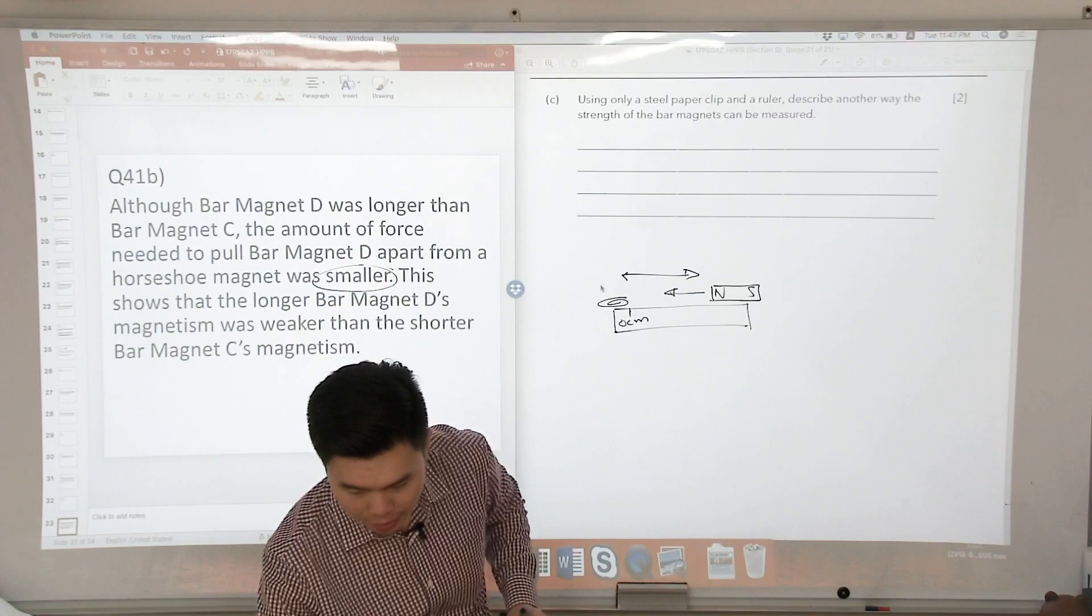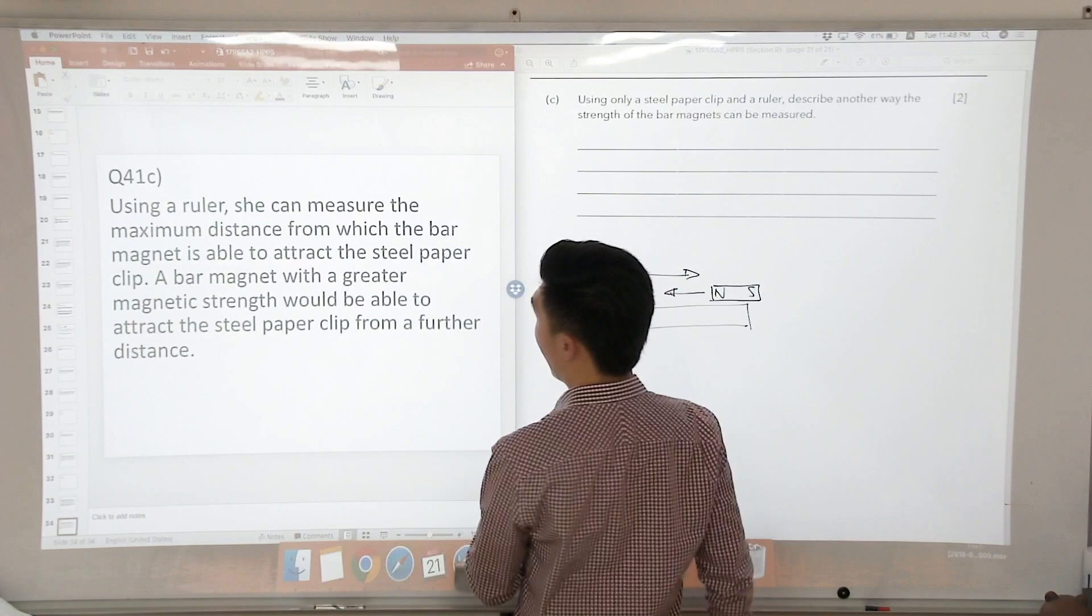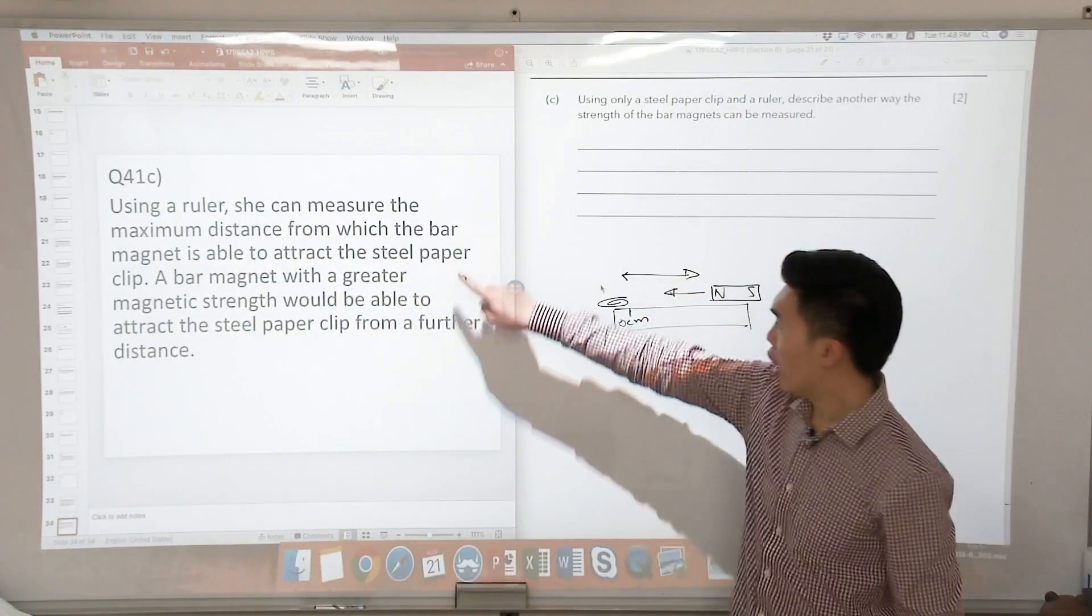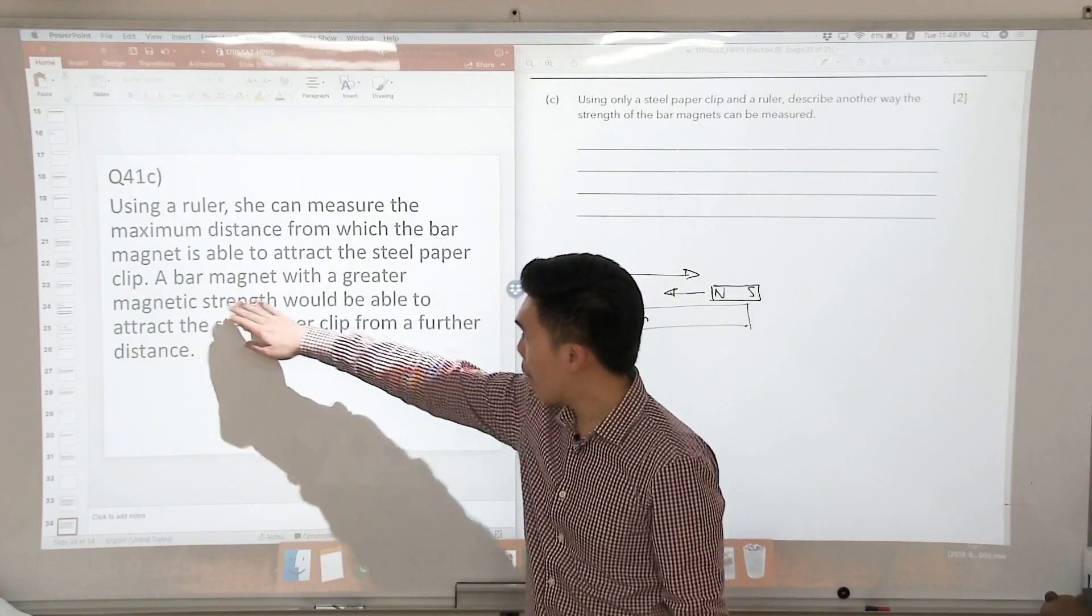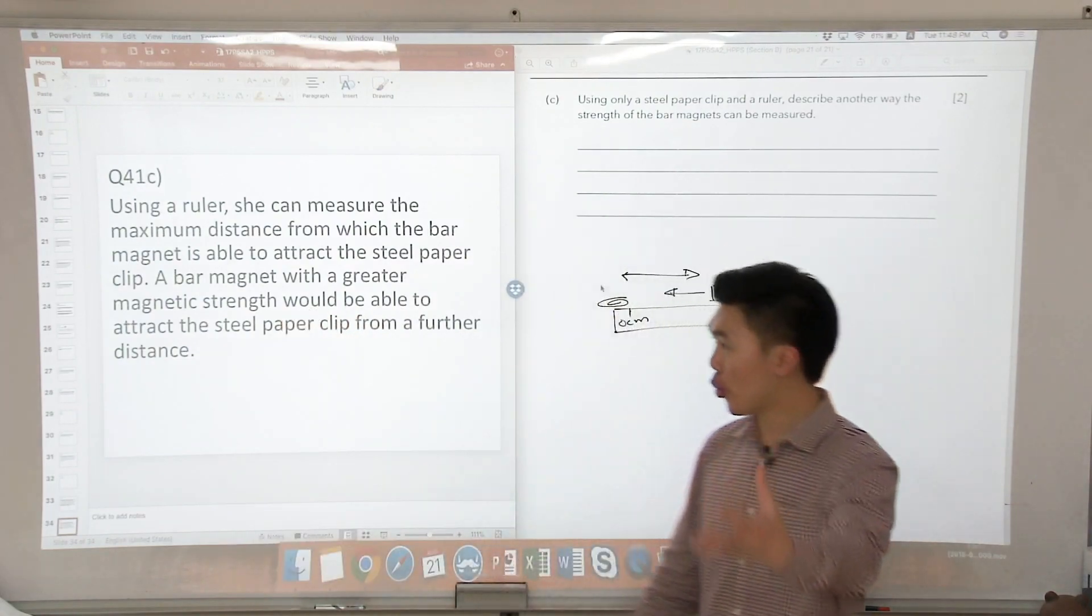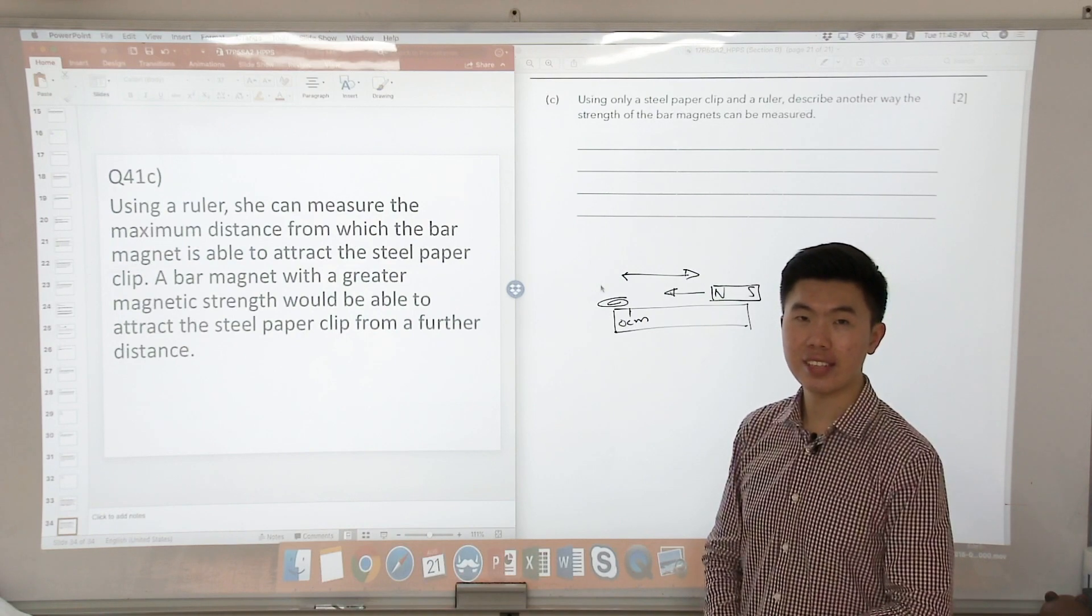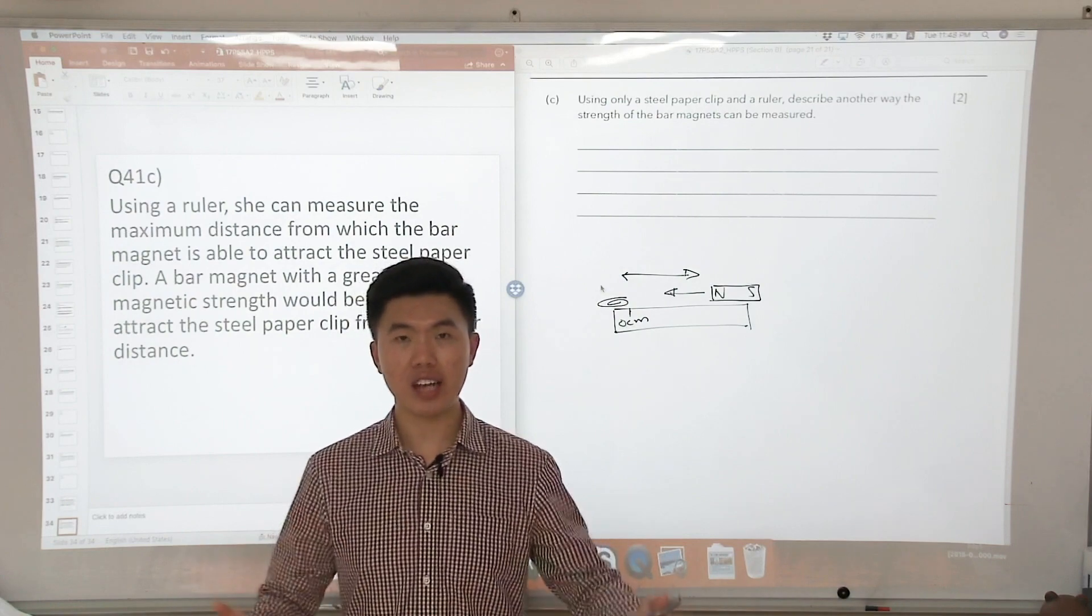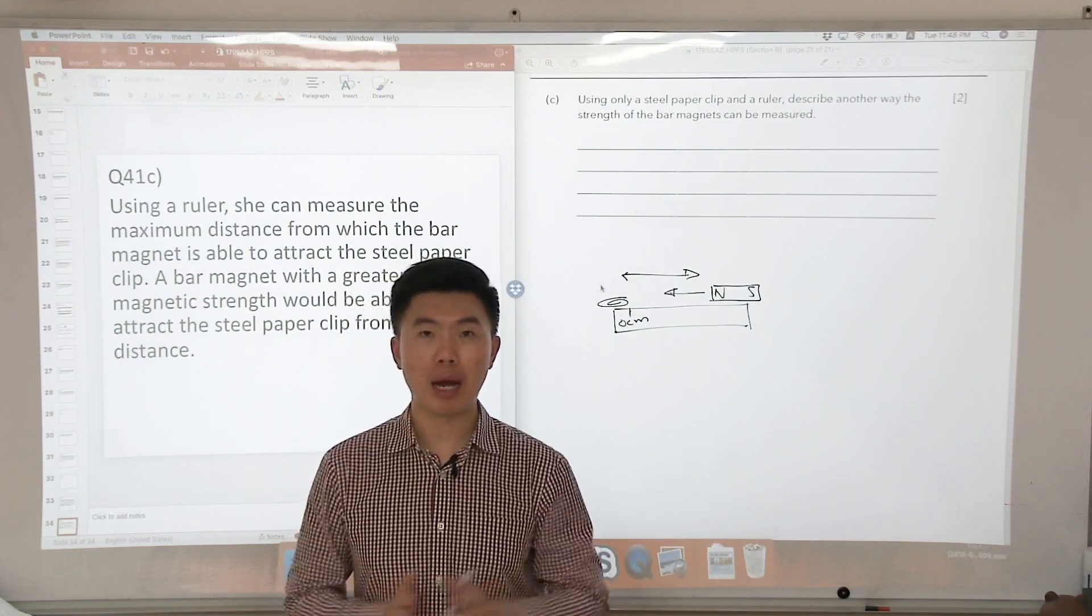A stronger magnet's magnetism can act at a further distance. So this is my answer for part C. So I'm going to use a ruler and she can measure the maximum distance from which the bar magnet is able to attract the steel paper clip. And what I mentioned just now, a bar magnet with a greater magnetic strength would be able to attract the steel paper clip from a further distance.